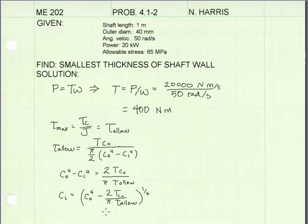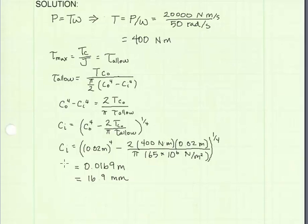I've now solved the equation above symbolically for the inner radius. Now I will substitute in values: T is equal to 400 newton meters, C naught is equal to half of our outer diameter, which will be 20 millimeters converted to meters, and tau allowable is given to us as 65 megapascals. Solving for inner radius, we get a value of 16.9 millimeters.